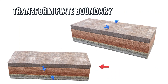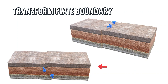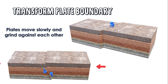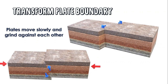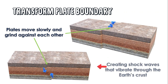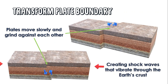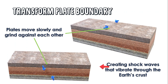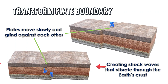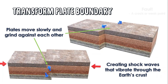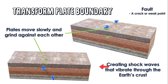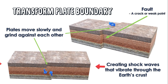Convection currents in the magma cause pressure to build up at the plate margins. Plates move slowly and grind against each other, creating shock waves that vibrate through the earth's crust, especially along lines of weakness called faults. A fault is a crack or a weak point found in the earth's crust.